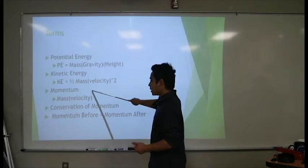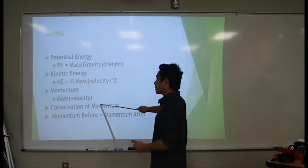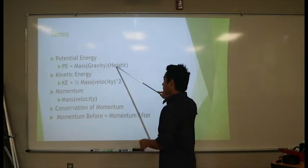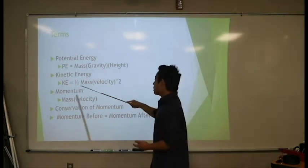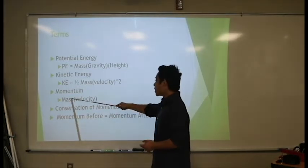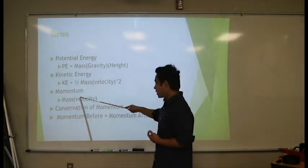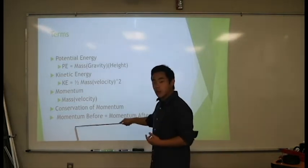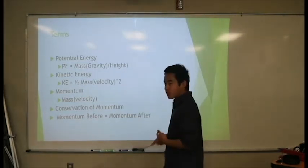Potential and kinetic energy, momentum and conservation momentum. Potential energy is mass times gravity times height. Kinetic energy is one half mass times velocity squared. Momentum is mass times velocity. And conservation of momentum means that the momentum before must equal the momentum after.